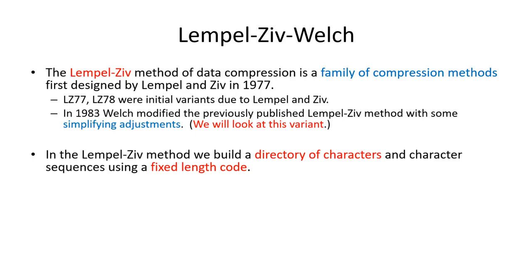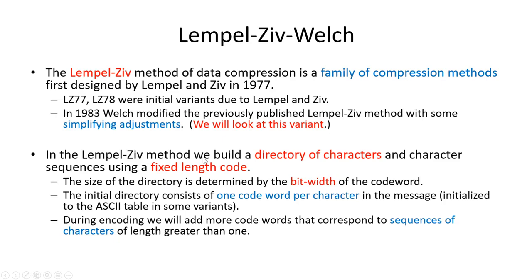A couple of shifts from Huffman to highlight: we'll still rely on a directory of characters, but now we're going to use fixed-length codes. In Huffman we switched to variable-length codes, which came with challenges. Now we switch back to fixed-length codes mainly to rely on the simplicity of decoding. We initialize our directory by selecting a bit width — how many bits to use. In practice we might start with the full ASCII table, which would require more than eight bits.